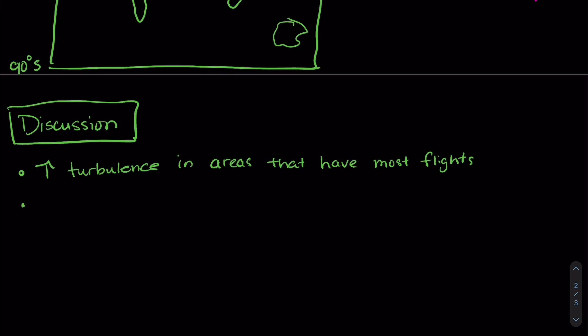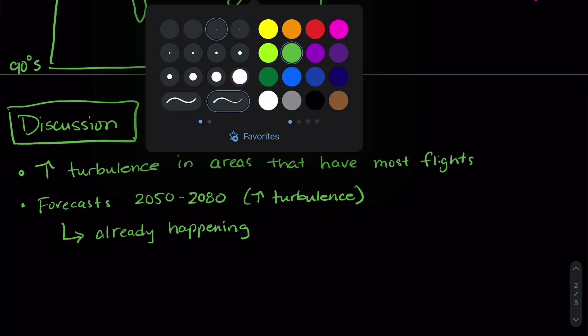So the next thing is that this research group has also been making some forecasts or predictions about what might happen to turbulence in 2050 to 2080. And combined with this data from this research paper, they looked at those predictions which agreed that turbulence was going to go up and think that this increase might already be starting to happen. Now this is really important again because of the potential for damage and the potential for people to get injured.